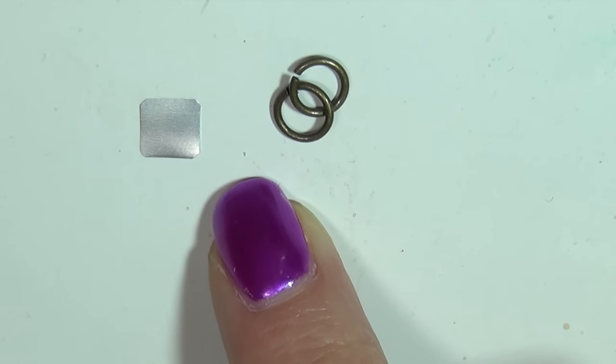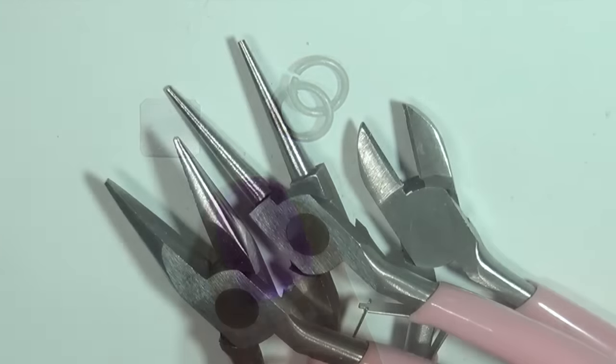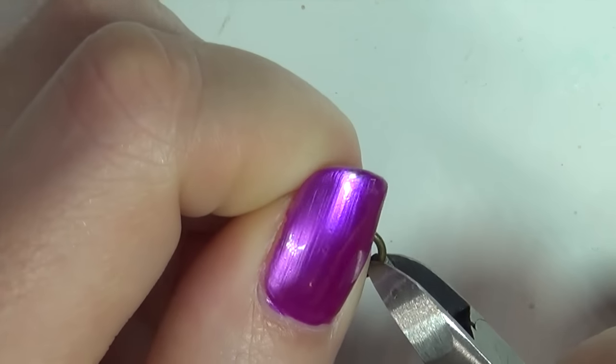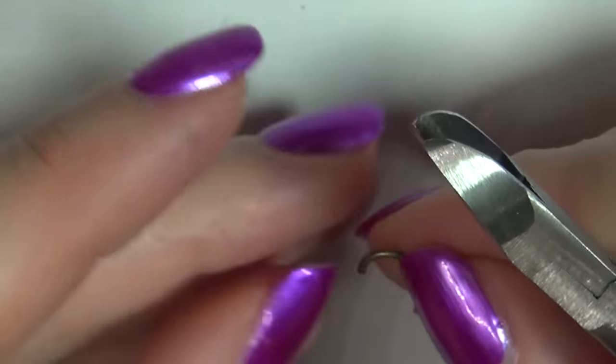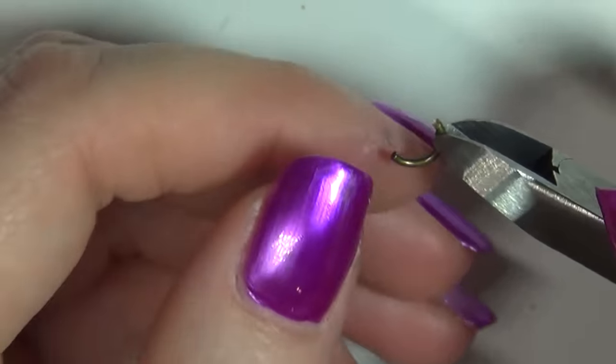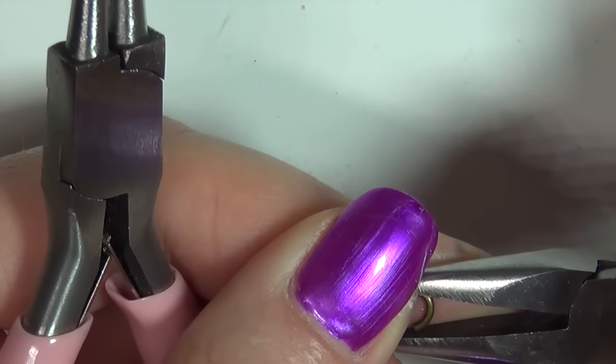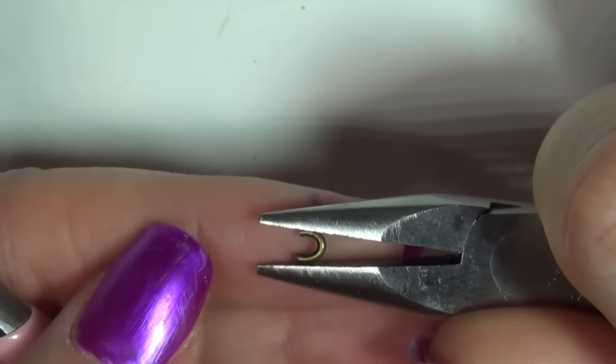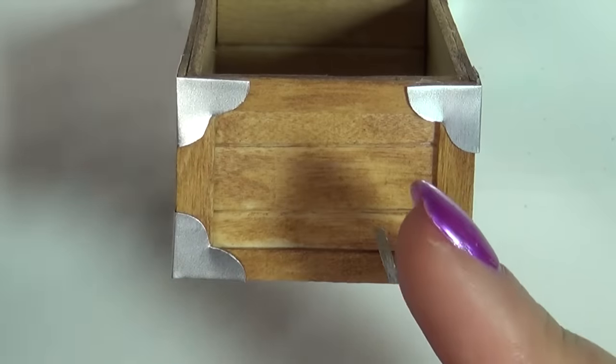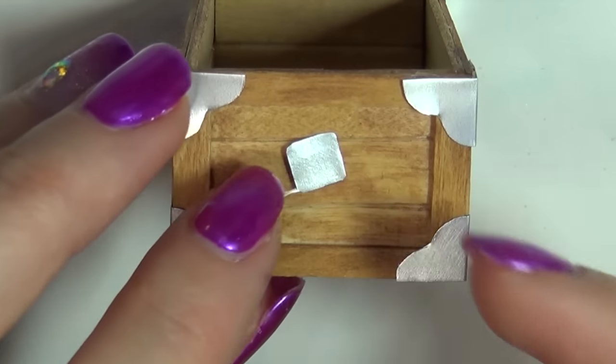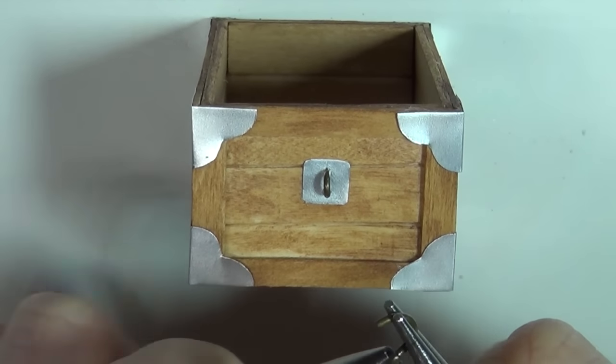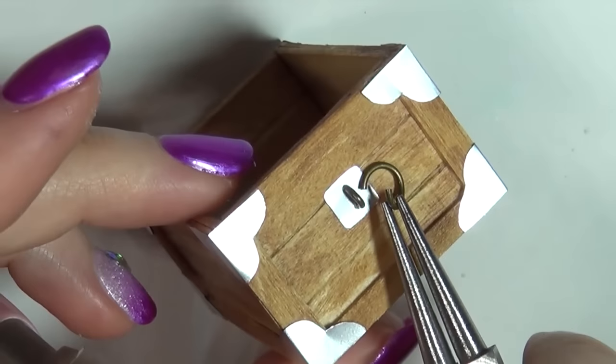For each handle, you're going to need a square piece of metal and a few jump rings. You're also going to need some pliers. Cut a piece of the jump ring and use the pliers to form it into a half circle. Then glue them to the chest like this. Then attach another jump ring to that little half circle, and there you've got the handle.